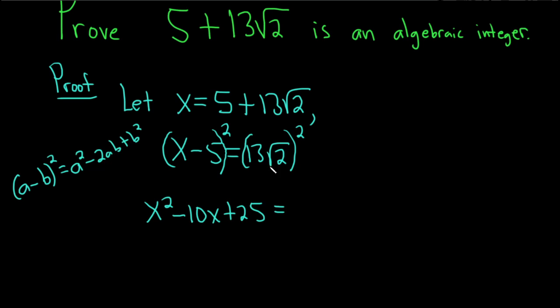Then here we end up with 13 squared, which is 169, times the square root of 2 squared, which is 2. And 169 times 2 is a pretty big number. It's 338.